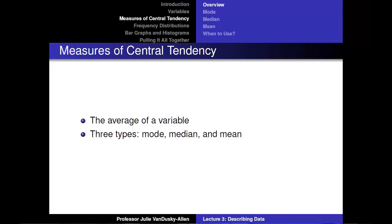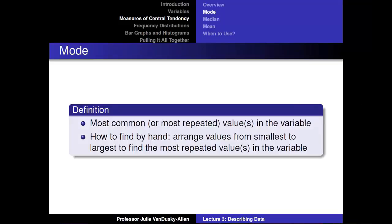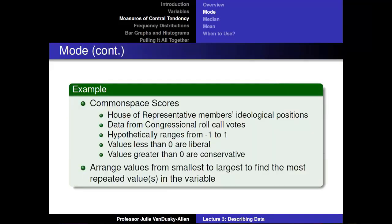Next, I am going to show you how to use basic statistics to describe data. First, I will discuss measures of central tendency — another way of saying the average or typical case of a variable. There are three measures: the mode, median, and mean. The mode is the most common or most repeated value. To find the mode by hand, arrange values from smallest to largest, then find the most repeated value. To demonstrate, I will use common space scores from the 106th Congress, which measure House members' ideological position using roll call votes, ranging from −1 (liberal) to 1 (conservative).